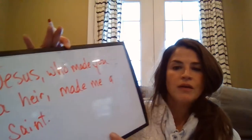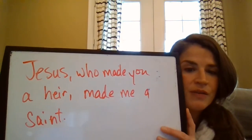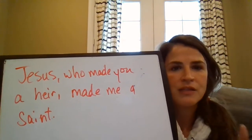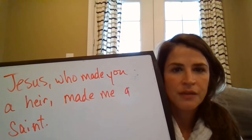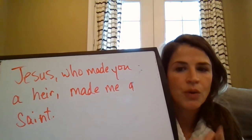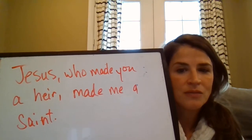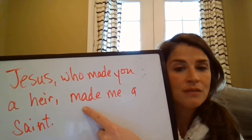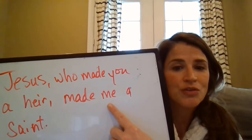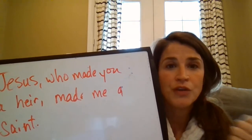The next example in our guide is: 'Jesus, who made you an heir, made me a saint.' This is an example of our new pattern S-V-T-D-O-O-C-N in a complex structure. Again, always start with your question confirmation: who or what is the sentence about? It's about Jesus. What's being said about Jesus? He made — he made what? He made me, so 'me' becomes our direct object, and that's a pronoun used as a direct object, so you can backtrack to your review of nouns and pronouns.